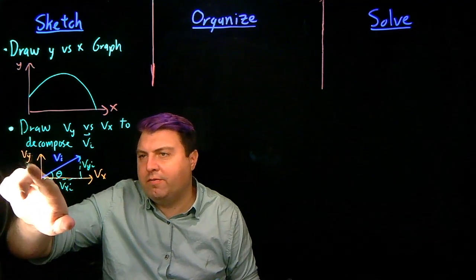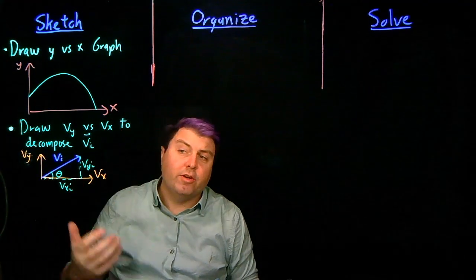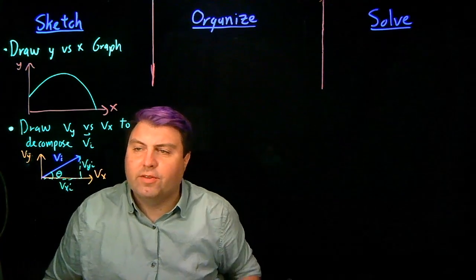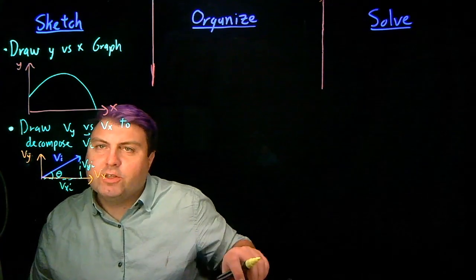So it could be that we know vi and the angle. It could be that we know vx-i and vy-i. It could be that we're trying to solve for theta, things like that.